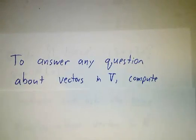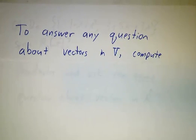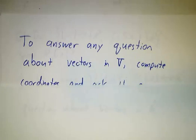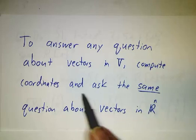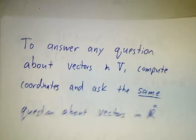What that means is whenever you've got a question—you've got a bunch of vectors in V and you're wondering, do they span, are they linearly independent, do they satisfy some equation—you convert into a question about R^n by just computing the coordinates of all the vectors and then asking that question in R^n.